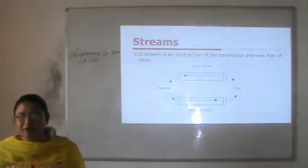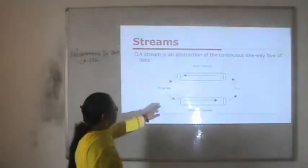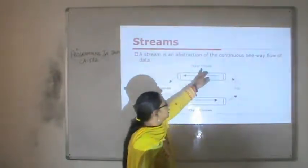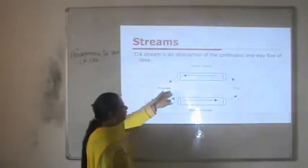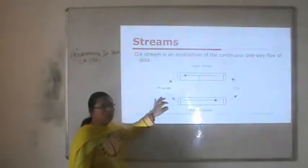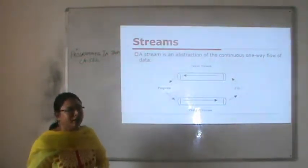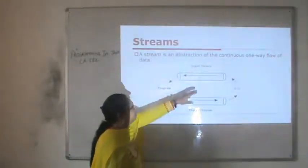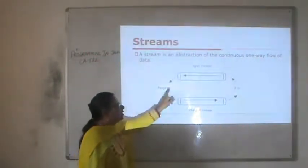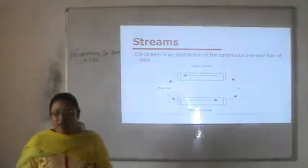A stream is an abstraction of continuous one-way flow of data. For example, if we have a program and we want to read some files, then an input stream is required. When we want to show some output, then an output stream is required. For example, to read from a file on the hard disk, we need an input stream — the data will come from the file and the program will read that data. And if the program wants to write some data into the file, then an output stream is required.